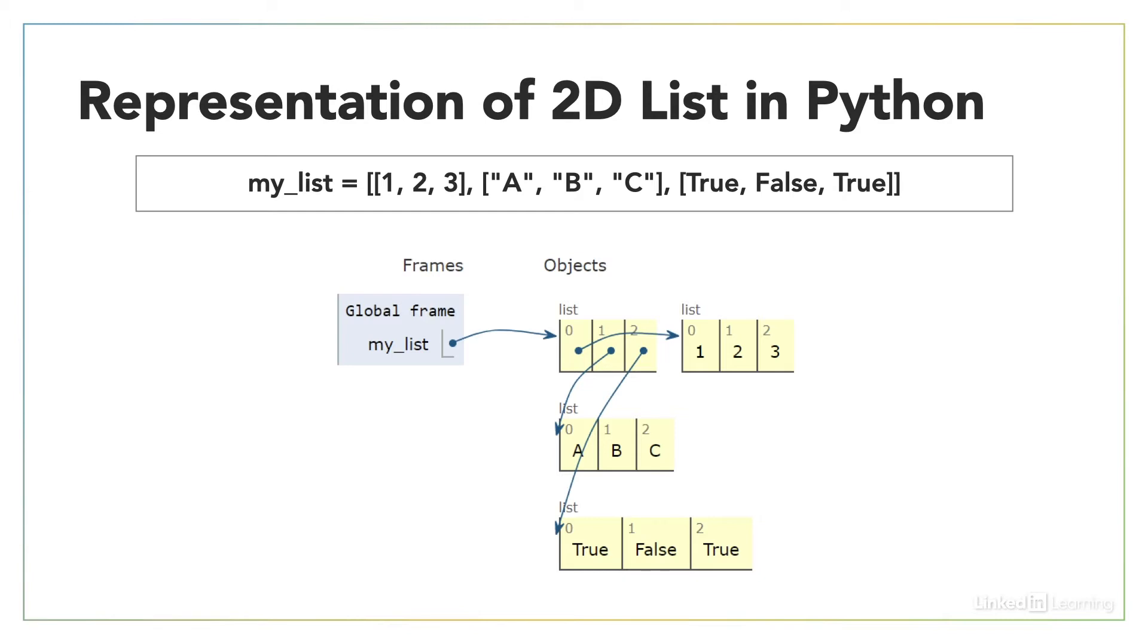And index 2 of that first list is pointing to a third list that contains the Boolean values true, false, and true.